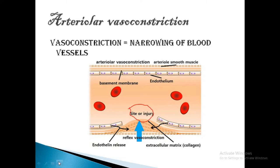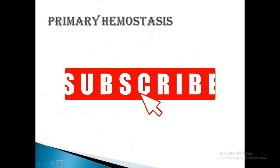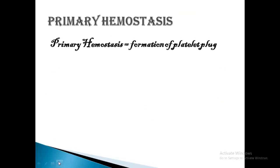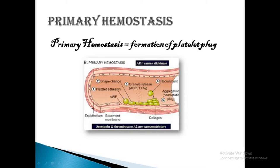But if there is no activation of platelets and coagulation factors, the bleeding would resume. Now let's come to primary hemostasis. Primary hemostasis is the formation of the platelet plug. Due to trauma or injury, the subendothelial VWF — von Willebrand factor — is exposed, which promotes platelet adherence and activation.